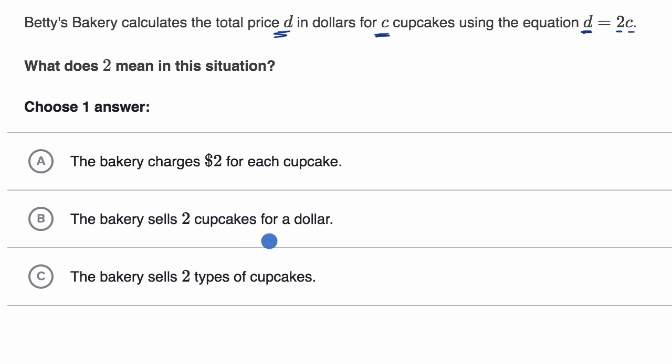All right, before I even look at the choices, let me just interpret this. They say d equals 2c tells us that however many cupcakes someone buys, we multiply that times 2 to get the amount of dollars, the price that they need to pay. So this must mean that each cupcake is $2, or that it's $2 per cupcake, because however many cupcakes we get, we multiply that by $2 per cupcake to get the actual price.